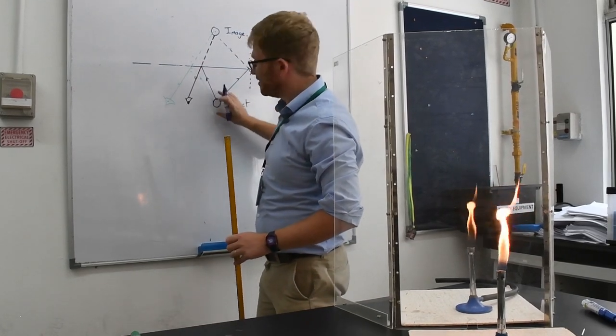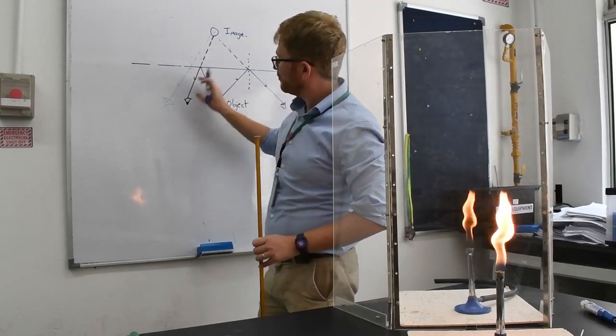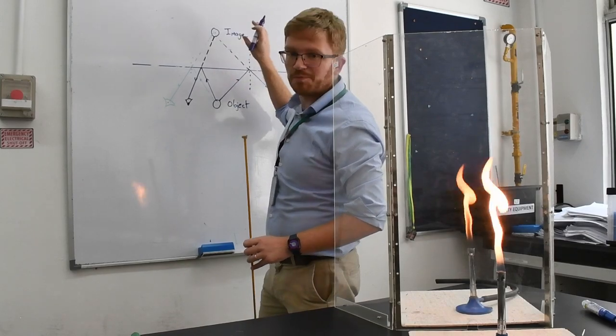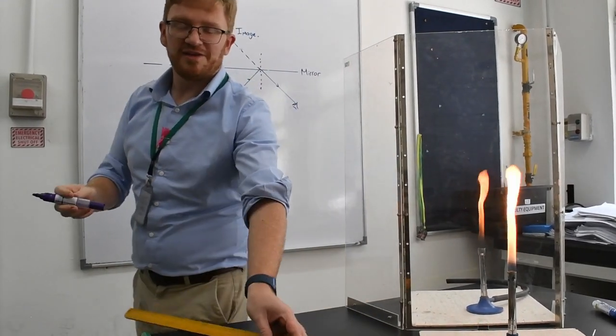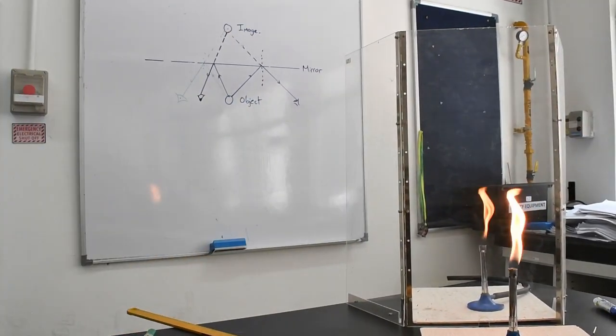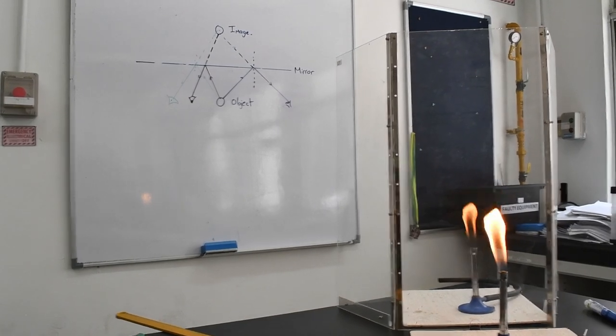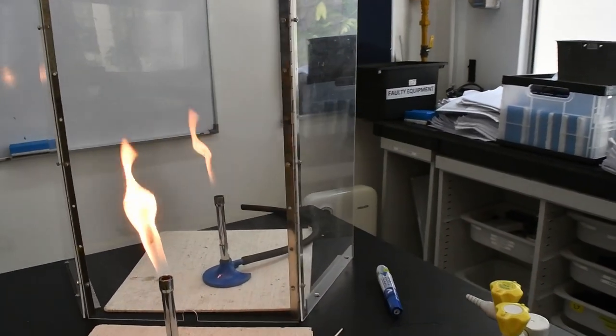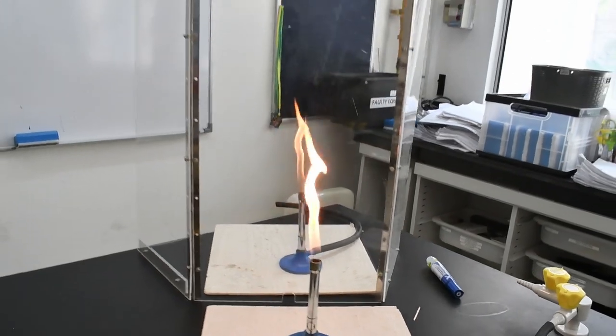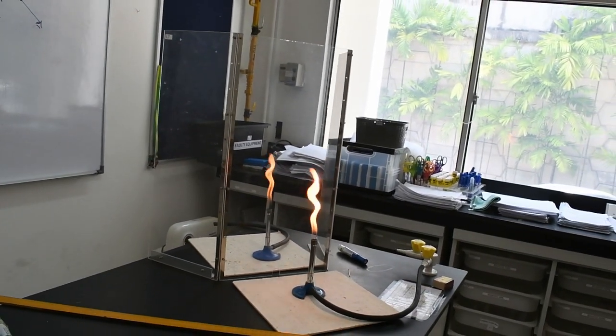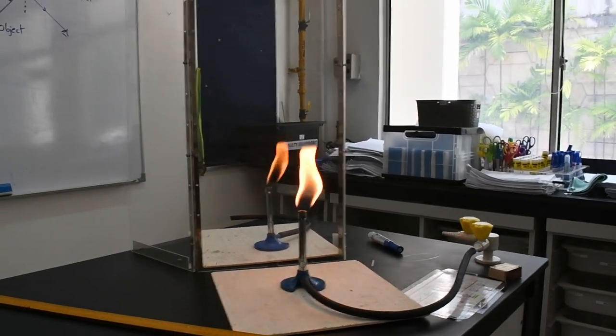All the light that's coming from this object is reflecting in a way that makes it appear to be coming from the image. And that's why, as we look around at this and we move from side to side, the image always seems to be in the same location.